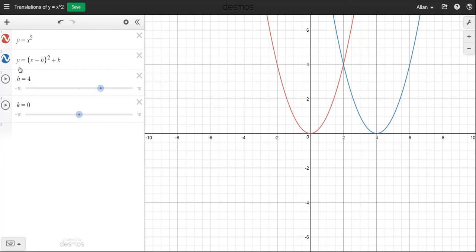So this would actually be the graph of y equals x minus four squared plus k. So if I make h four, it's gone four to the right.